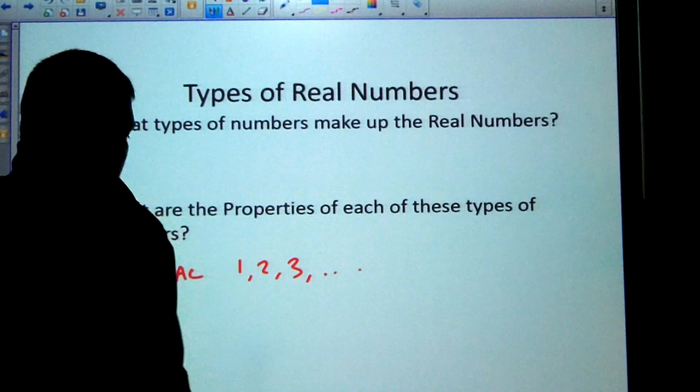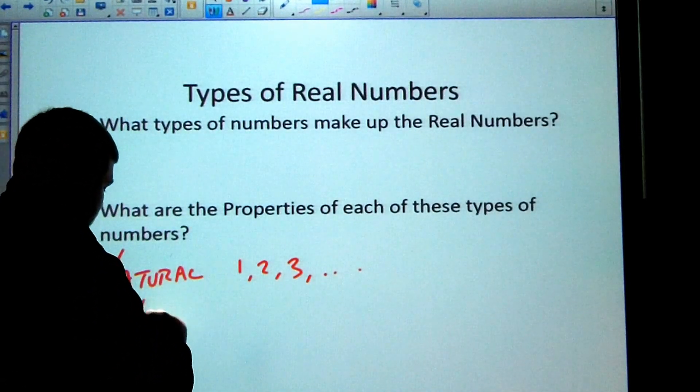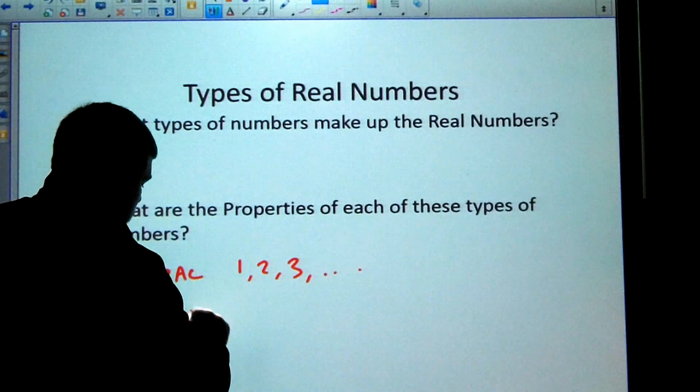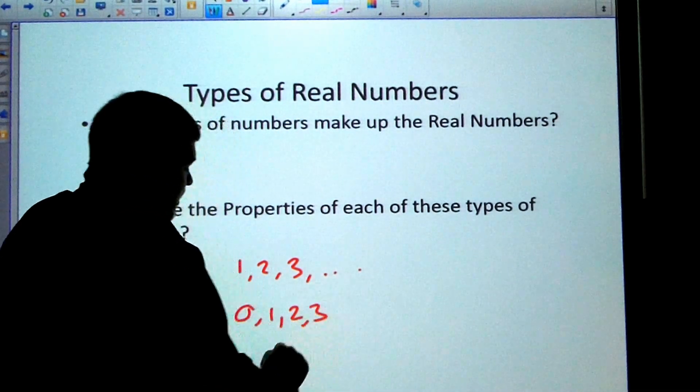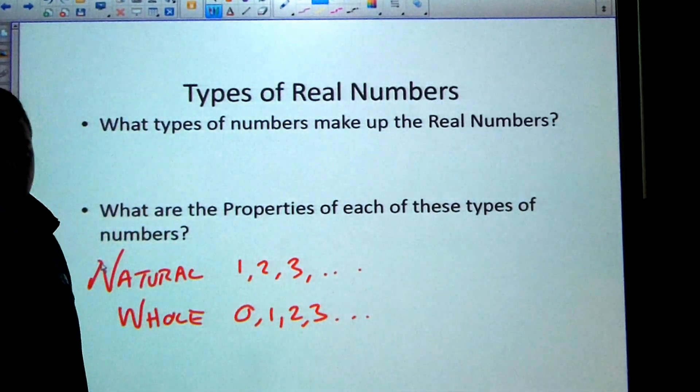The whole numbers, we just add zero. So we have zero, one, two, three, et cetera. It goes on like that.